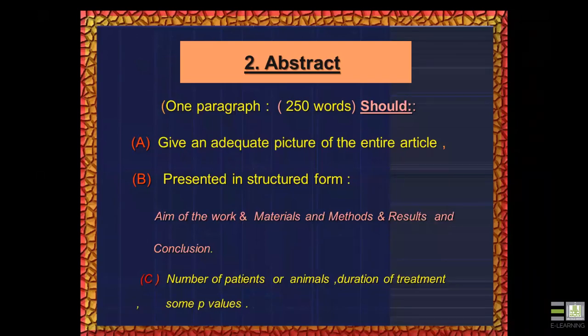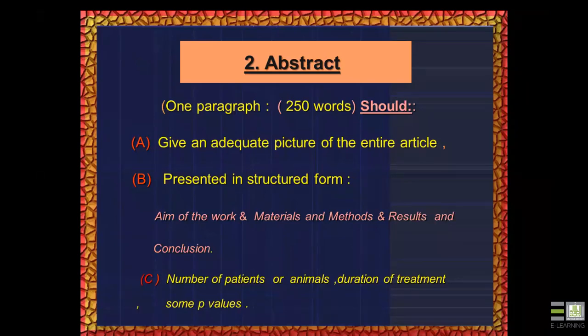When choosing an abstract format, check the instructions for authors. The abstract should give the reader an adequate picture of your work. Some journals require structured subheadings — aim, methods, results, conclusion — separated by colons, while others allow a continuous paragraph. It depends on the journal.